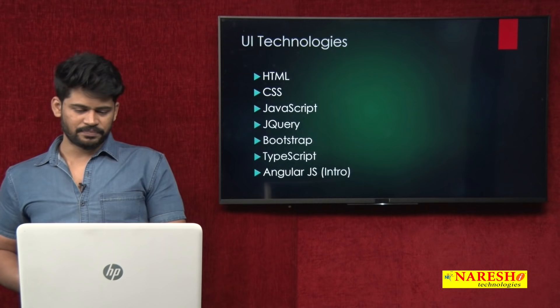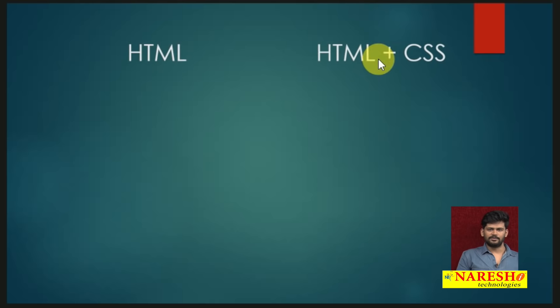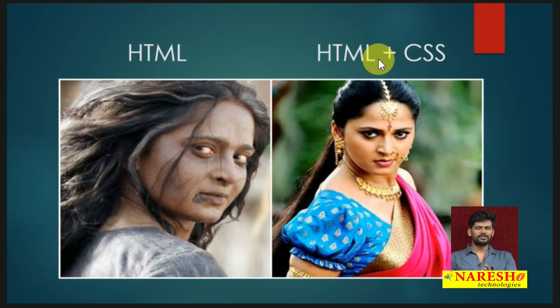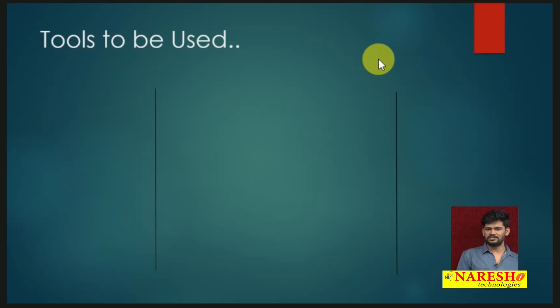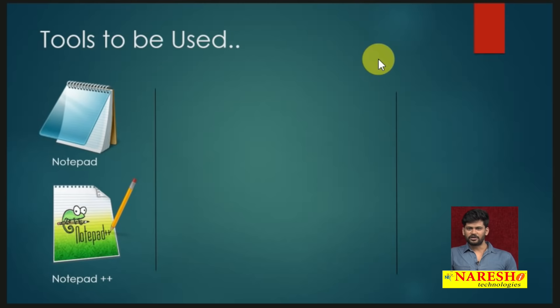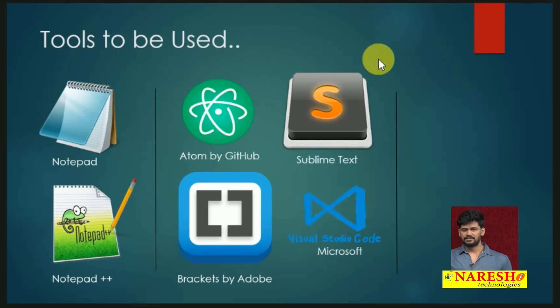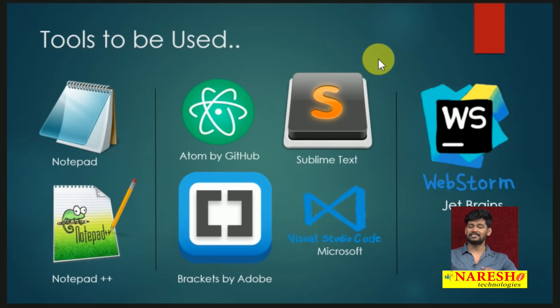Next, we will see the difference between HTML and CSS. If you just use HTML, it will look like this. If you add HTML along with CSS, it looks much better — which one do you want? This is how the website looks. And what tools will we be using in the entire application development? We are not going to use Notepad or Notepad++ because we are doing a lot of applications. We will be using these editors: Atom, Sublime Text, Brackets, Visual Studio Code, and even the IDE WebStorm.